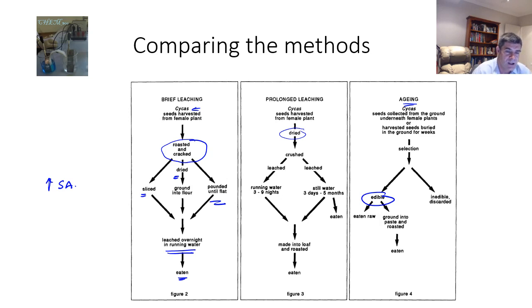And again, they can just be eaten as seeds or ground into pastes and then roasted, made into breads and that sort of thing. So these are three different methods that are applied to ensure that the toxic chemicals that are found inside of the cycad seeds are removed and so that they are then safe for human consumption.